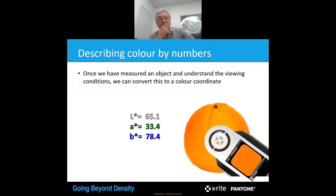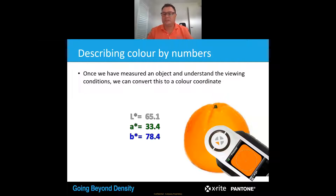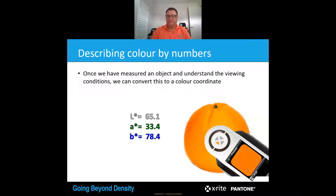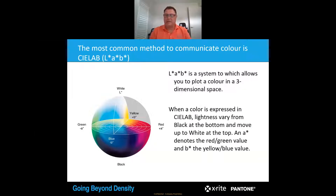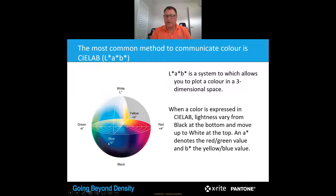We now have three coordinates that we can use to plot any achievable colour, and I can communicate that to somebody and it can mean something. That is what we call the LAB colour space, where L is the lightness axis, A is the green-red axis, and B is the yellow-blue axis. That enables us to communicate any of those colours by three coordinates.